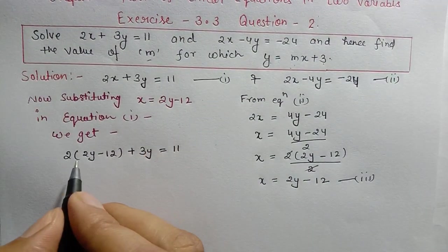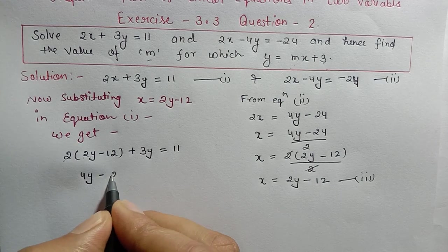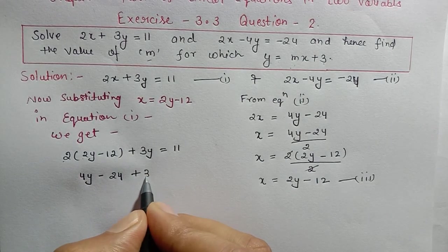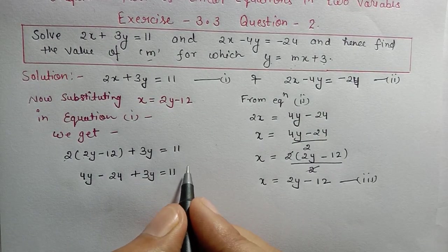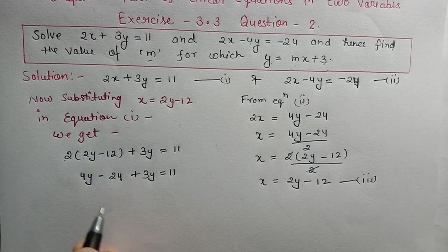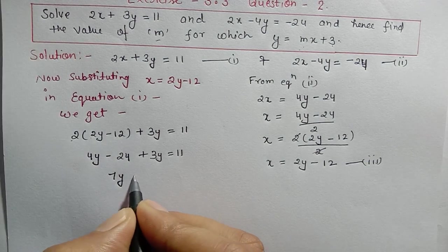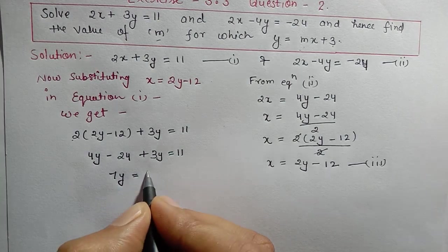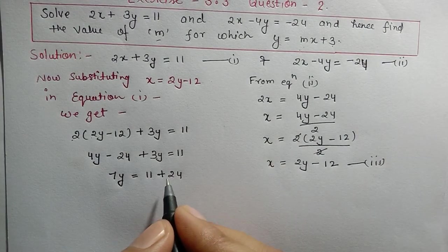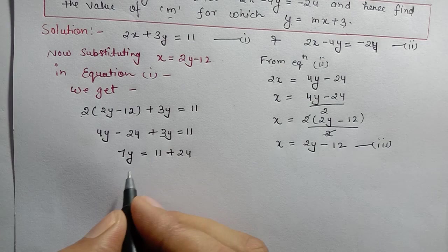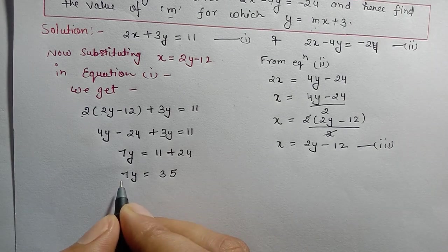Expanding: 2 × 2y = 4y and 2 × 12 = 24, so we get 4y - 24 + 3y = 11. Adding 24 to both sides: 4y + 3y = 11 + 24 = 35. Therefore 7y = 35.